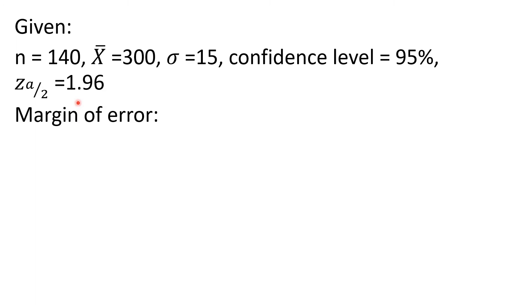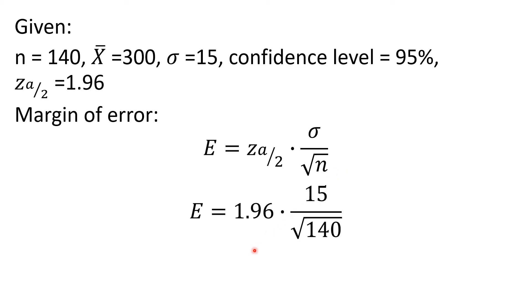First, let us solve for the margin of error, denoted by capital E. Considering the given, we use the formula: E equals the confidence coefficient times standard deviation over the square root of n. By substitution, E equals 1.96 times 15 over the square root of 140. Using a calculator, the value of E, or margin of error, is 2.48.